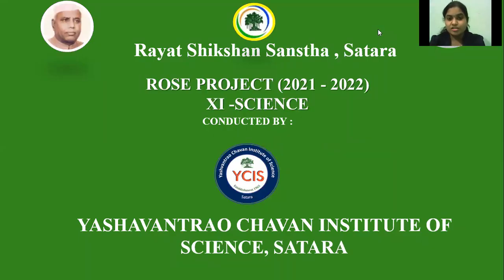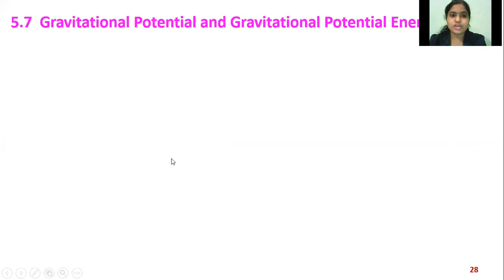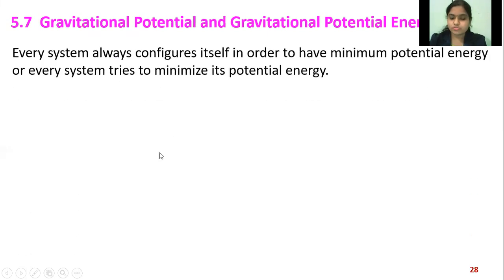Welcome to Rehsiksha and Sansa Satara's Rose Project 2021-22 of 11 Science, conducted by Yeshuntra Chauhan Institute of Science Satara. My name is Dehre Manu and this is the fourth lecture of gravitation. In the previous lecture, we studied variation of g with altitude and depth, the graph of g due to depth and altitude from the Earth's surface, variation of g with latitude, and the effect of shape of the Earth. In this lecture, we will study gravitational potential and gravitational potential energy.